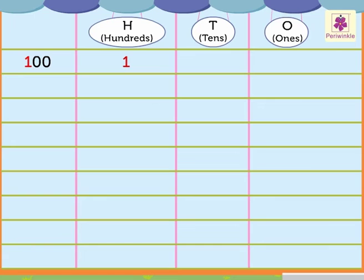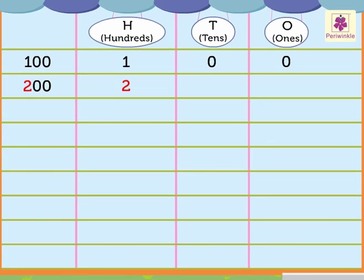Then we place the zero of the zero tens in the tens column and the zero of the zero ones in the ones column. Now let us take the number 200 — it has two hundreds, zero tens, and zero ones. We place the two of the two hundreds in the hundreds column, zero of the zero tens in the tens column, and zero of the zero ones in the ones column.